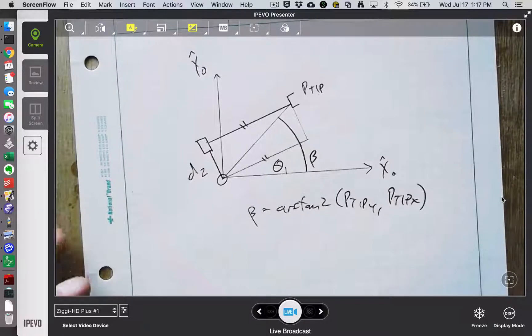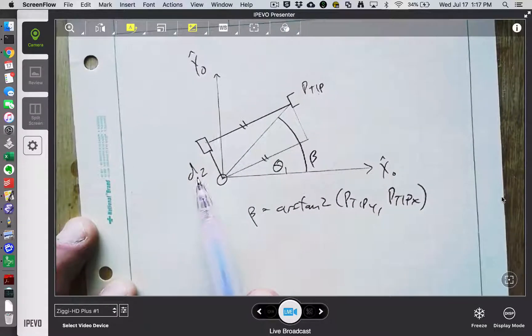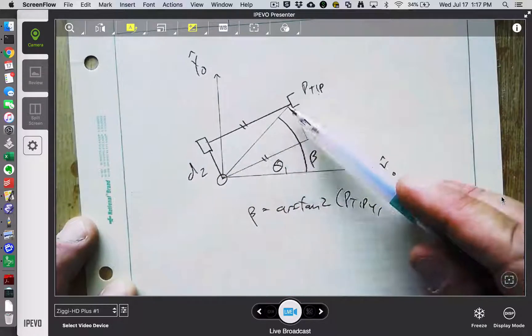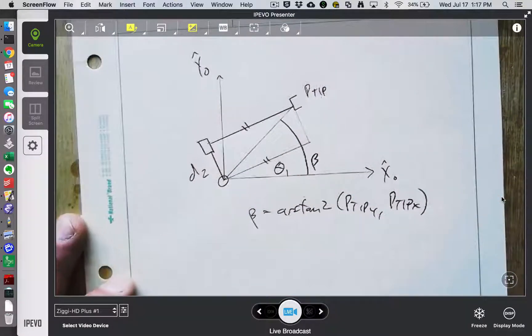Now it might be fairly close depending on the ratio between D2 and either this distance or this distance. The closer D2 is to that radius, the bigger problem you have.